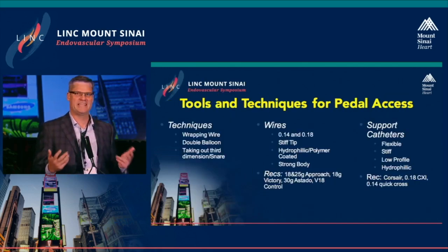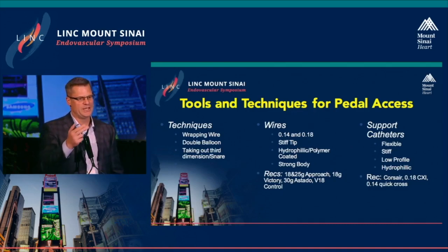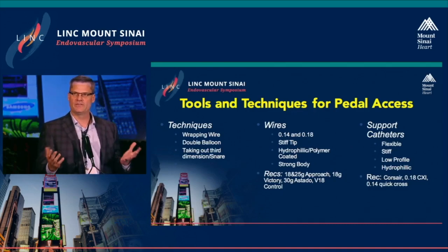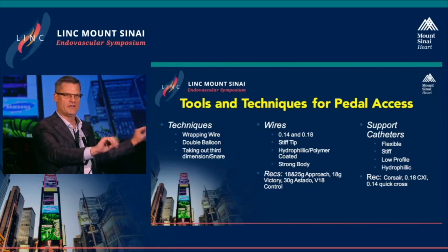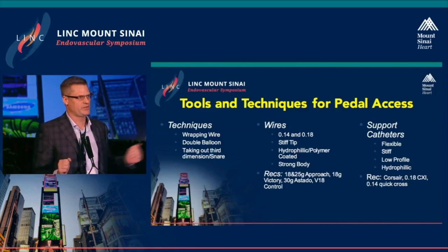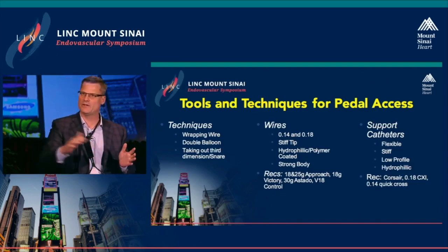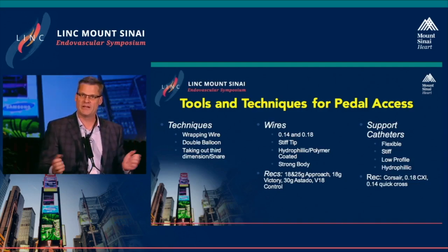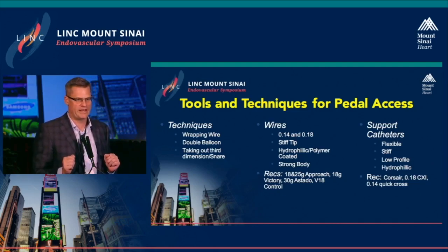What are some of the actual devices we use? Remember, a carpenter is only as good as his tools. In terms of wires, we've talked about 0.014, 0.018, and 0.035 platforms. I typically use a 0.014 platform. When you look at all the devices on your shelf, if you use a 0.014 platform especially below the knee, you can use any device available. Going to 0.018 you lose about a third of those devices, and going to 0.035 you lose about two thirds. I encourage everyone to become versed at using 0.014 platforms.